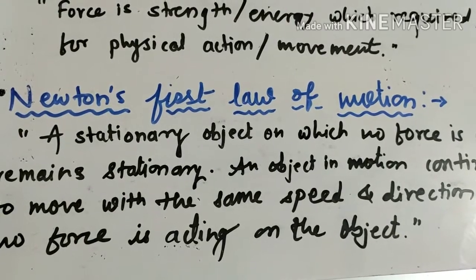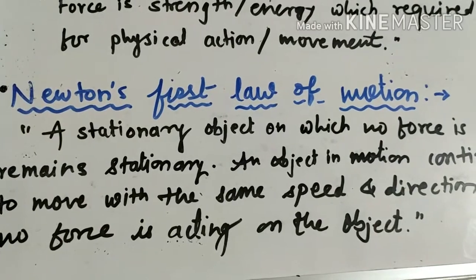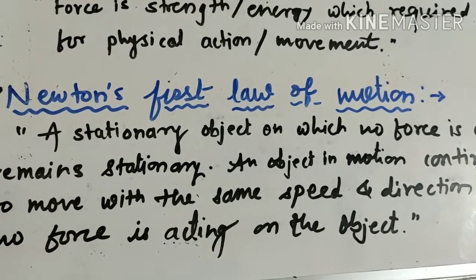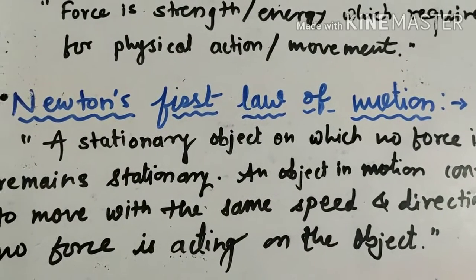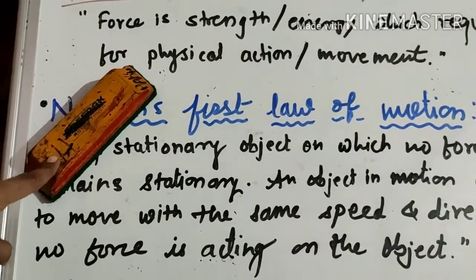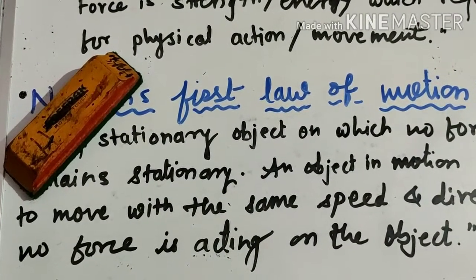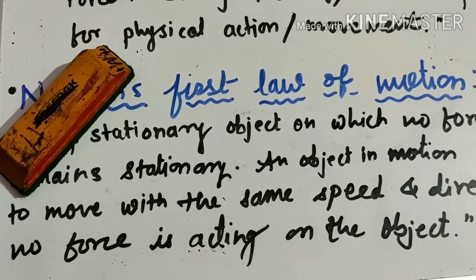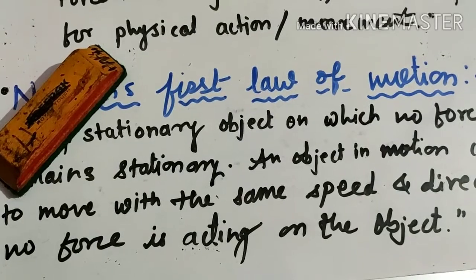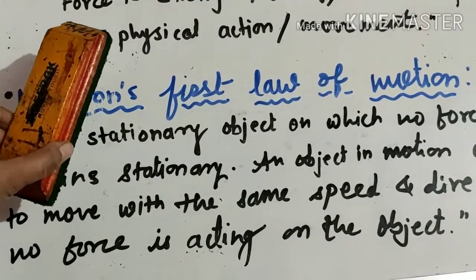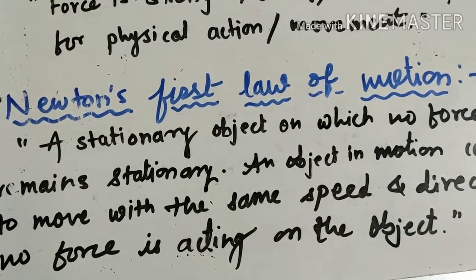Stationary means stable, staying in one place. Until you apply any kind of force on an object, the object remains stationary. For example, suppose this is a duster. This duster is now stationary. When we apply force, then it is not stationary, it moves.